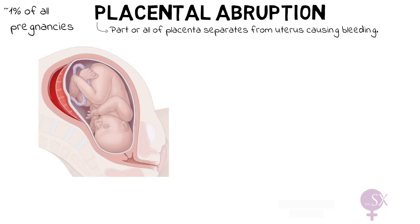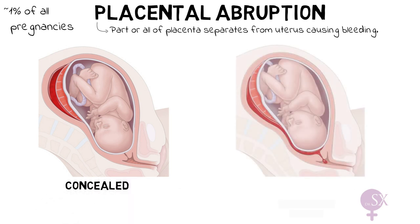This may either be confined to the pocket behind the placenta, referred to as a concealed bleed, as we can see over here, or else some of the blood may track down between the membranes and the uterus and present as vaginal bleeding — this is referred to as a revealed placental abruption. The concealed form is however much more common.